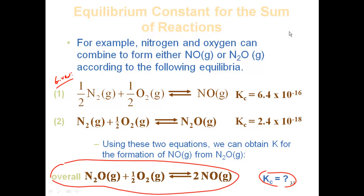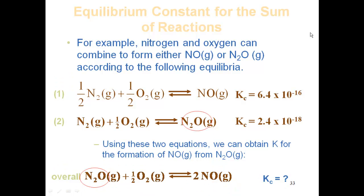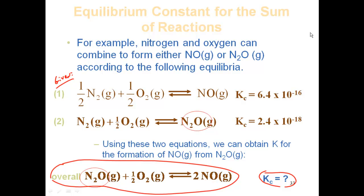Going left to right in the target equation, let's start with dinitrogen oxide, N2O. Can I find it in one of the given equations by itself? Yes — it appears in the second given equation. I ask two questions: first, is it on the correct side? In the target equation it's a reactant, but in the given it's a product. So no — I have to flip that reaction, which means I'll take the reciprocal of that K.